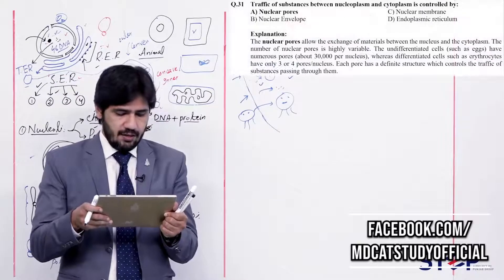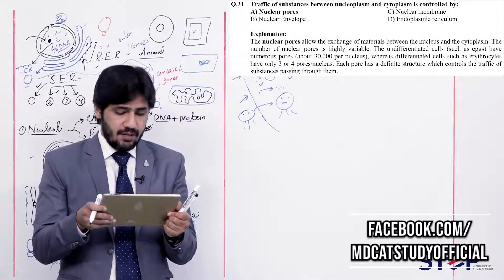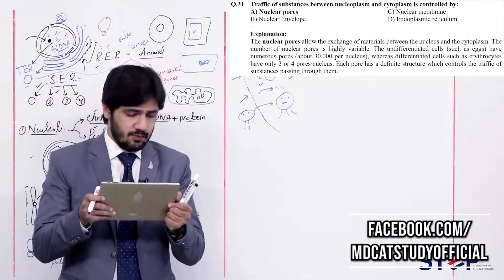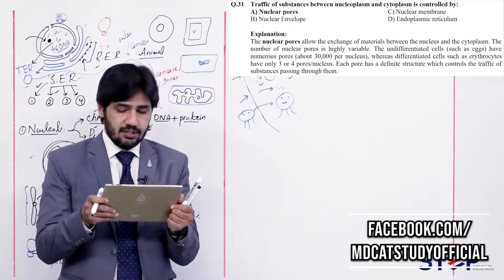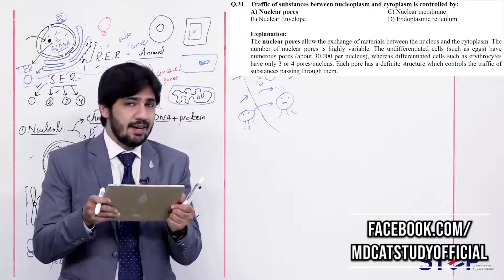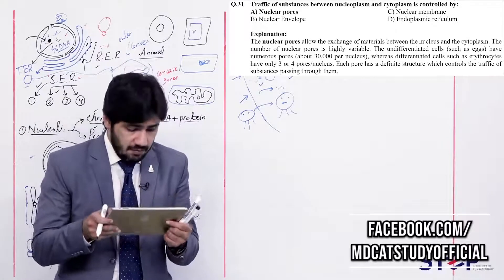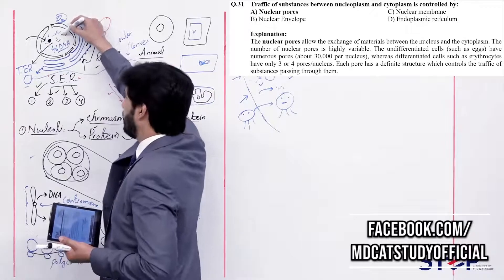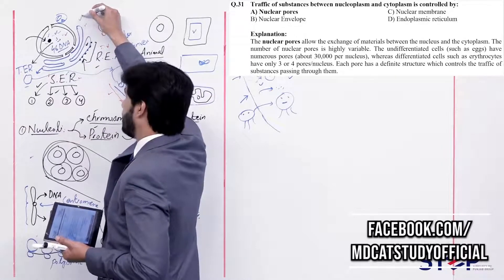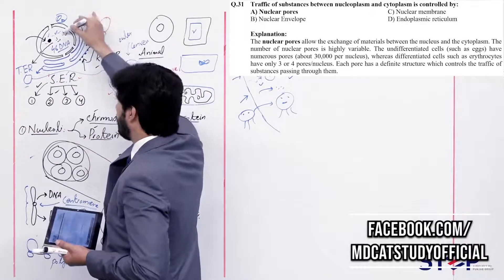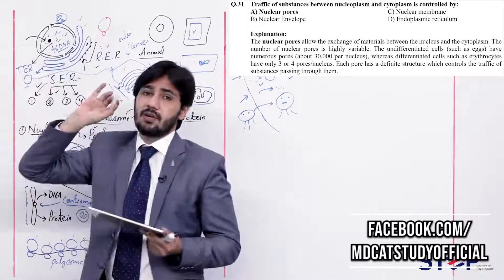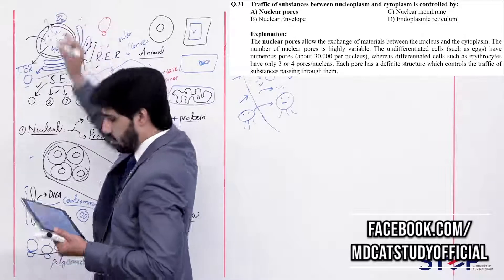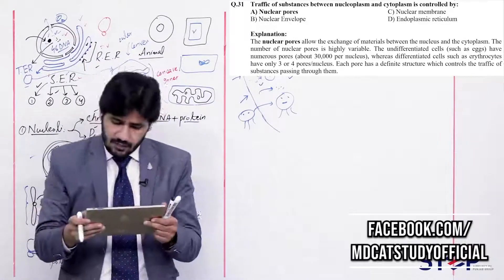Question 31: Traffic of substance between nucleoplasm and cytoplasm is controlled by (alpha) nuclear pores, (beta) nuclear envelope, (charlie) nuclear membrane, (delta) endoplasmic reticulum. The transport of material between nucleoplasm and cytoplasm does not occur through the nuclear membrane directly — it occurs through nuclear pores. So the right option is alpha — nuclear pores.